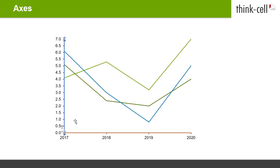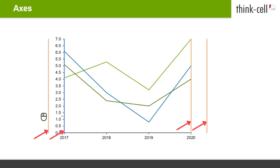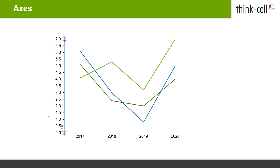In a line chart, you get two different positioning options for the y-axis on each side. If you do not want the data points of the first category to be placed directly on the y-axis, you can drag the y-axis to the left to leave a small gap between it and the first category.